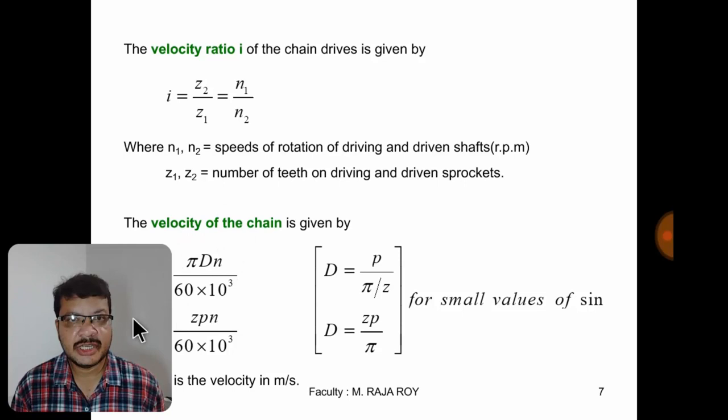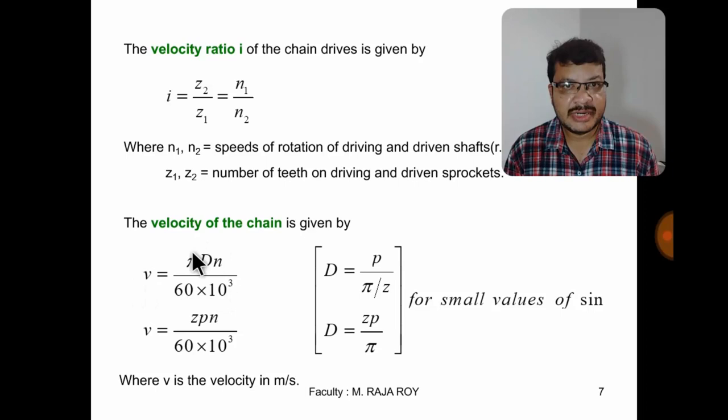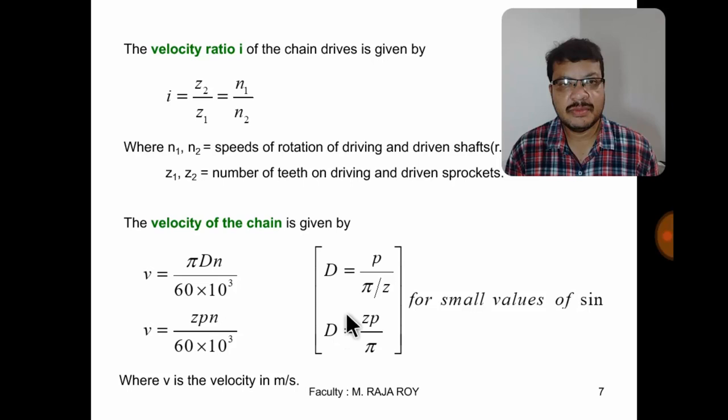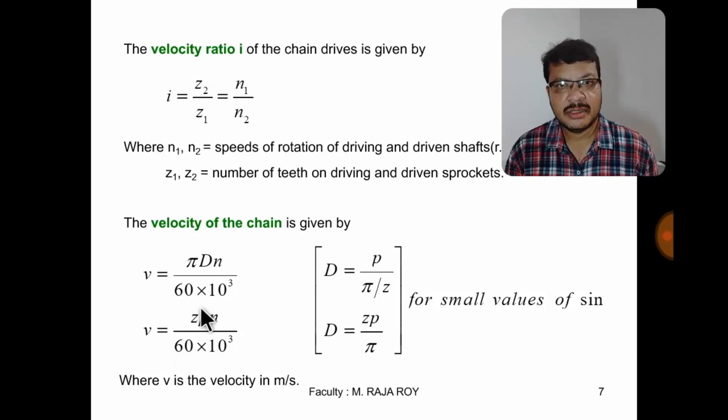Next, the velocity of the chain: v = π·d·n / (16 × 10³). When d is in millimeters, you write 10³ in the denominator. We already derived d = p / sin(180/z). For very small values, sin(180/z) can be approximated as π/z, so d becomes zp/π. Substituting this d value, the velocity equation becomes v = zpn / (16 × 10³). This is the equation for velocity.